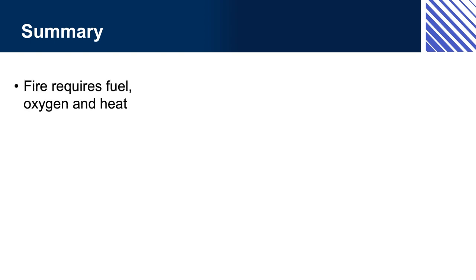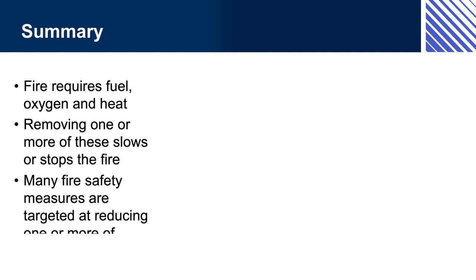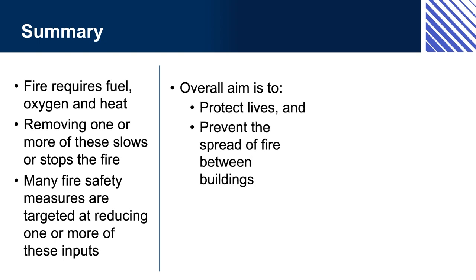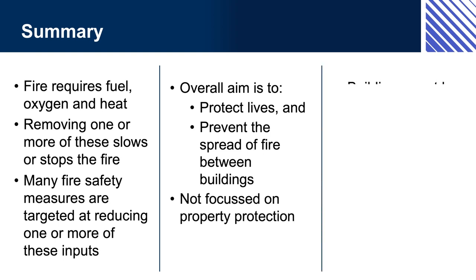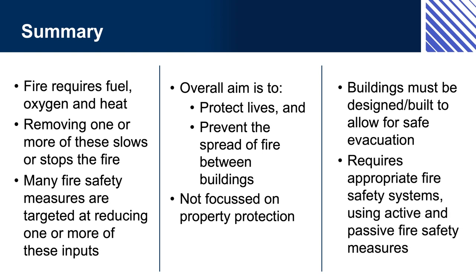Summary. Fire requires fuel, oxygen, and heat. Removing one or more of these slows or stops the fire. Many fire safety measures are targeted at reducing one or more of these inputs. The overall aim is to protect lives and prevent the spread of fire between buildings — not focused on property protection. Buildings must be designed and built to allow for safe evacuation, requiring appropriate fire safety systems using active and passive fire safety measures.